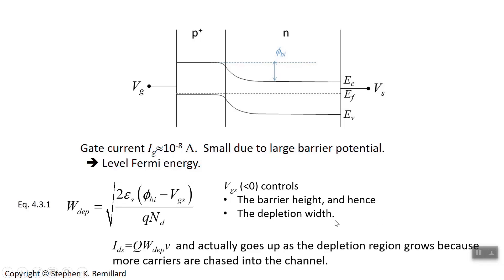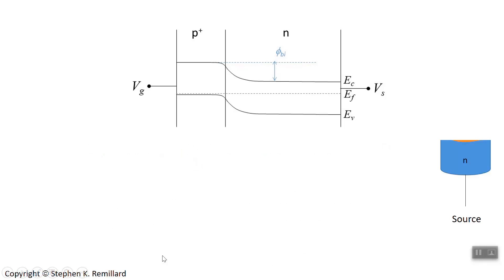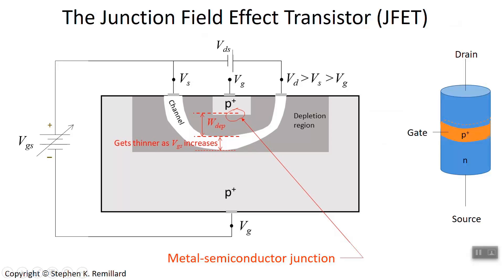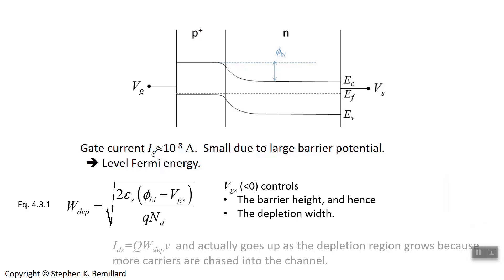The drain-source current depends on the depletion region — interestingly, the wider the depletion region gets, the higher the drain-source current. This seems counterintuitive since a growing depletion region chokes off the channel toward pinch-off. But as you increase the depletion width, you're generating more free carriers for the channel — the depleted region pushes free charge carriers into the channel, supercharging it with lots of free carriers. That's why increasing the reverse bias increases drain-source current.